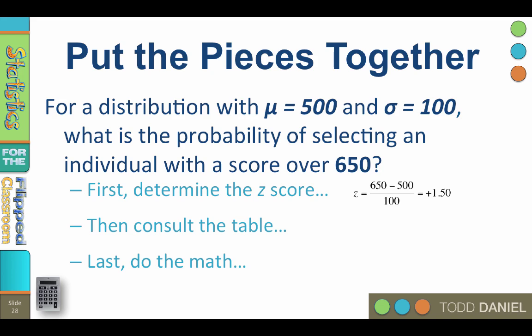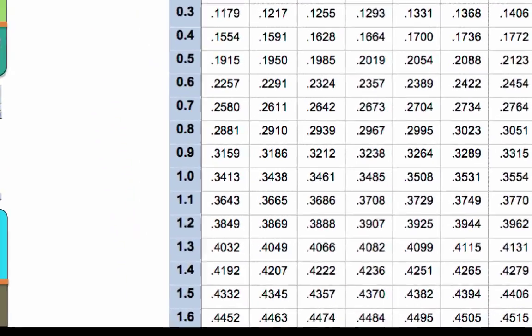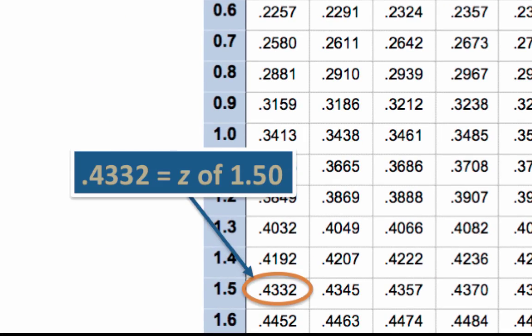Next, look up the z-score in the z-table. A z of 1.50 equals 0.4332.